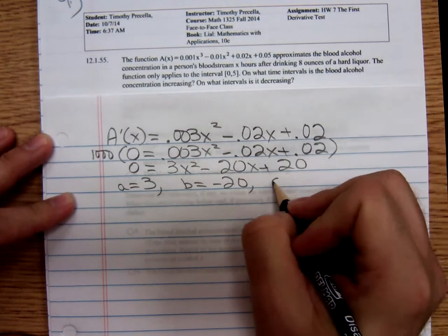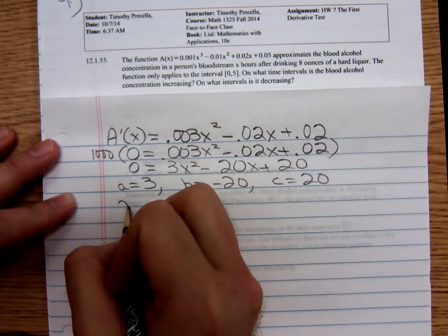So a is equal to 3, b is equal to negative 20, and c is equal to positive 20. Recall the quadratic formula.